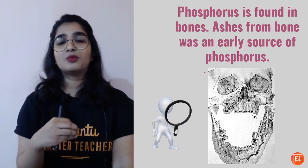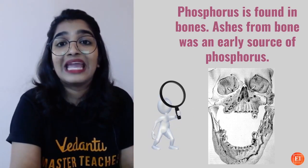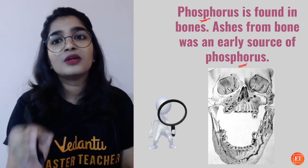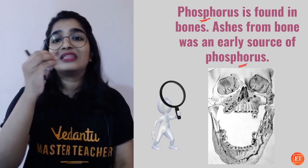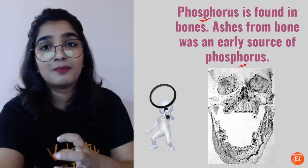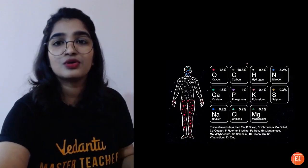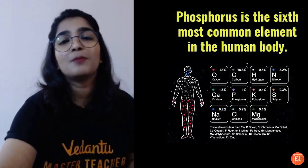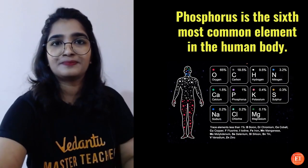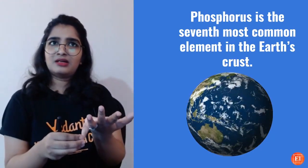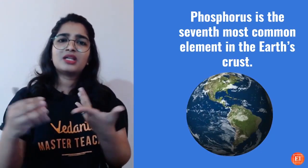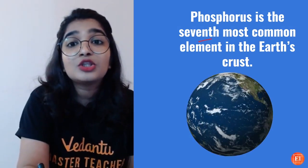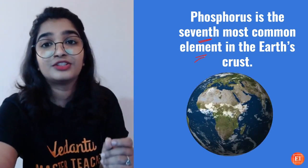Although calcium is the major element in bones, phosphorus is also found in bones, and ashes from bone were an early source of phosphorus. Phosphorus is the sixth most common element in the human body — because it is present in DNA, RNA, cell membranes, and ATP — and the seventh most common element in the Earth's crust.